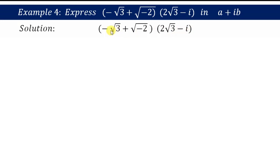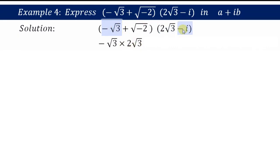For further simplification, let us multiply the brackets. First, -√3 multiplied by 2√3, then -√3 multiplied by -i. Negative times negative gives positive, so we get +√3·i.